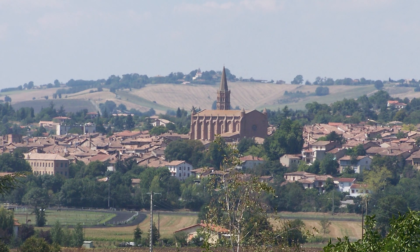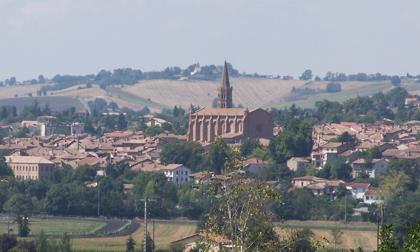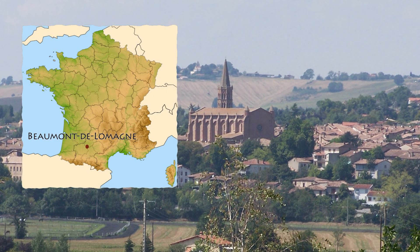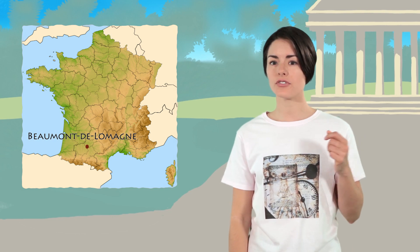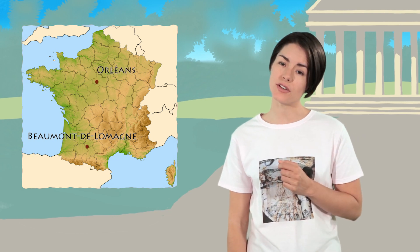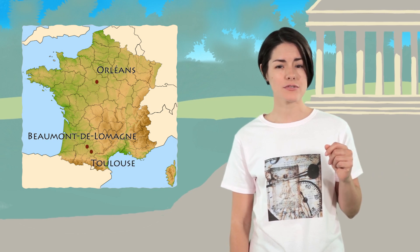Pierre de Fermat was born a little after 1600 in Beaumont-de-Lomagne in southern France. He received his law degree from the University of Orleans, and his professional resume was simple. He served as a lawyer and member of Parliament in Toulouse until his death.